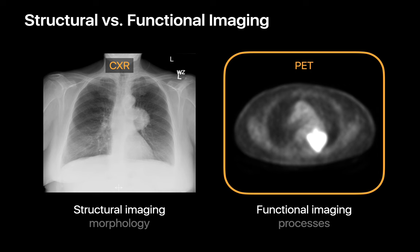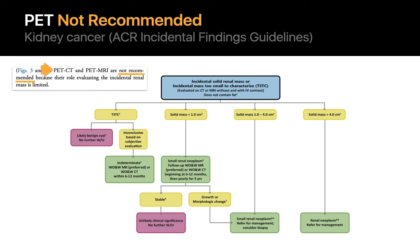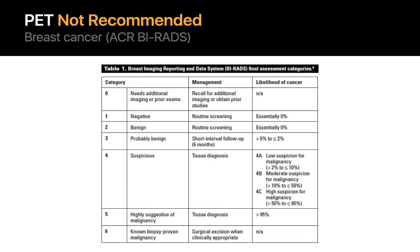The most common functional imaging study we use in daily practice is PET imaging. However, the use of PET imaging is heterogeneous in diagnostic radiology. While it's a standard part of the diagnostic strategy for lung cancer and malignant lymph nodes, PET imaging is not a routine part of the diagnosis of renal malignancies and breast cancer. To understand why, we'll first need to understand how PET imaging works.